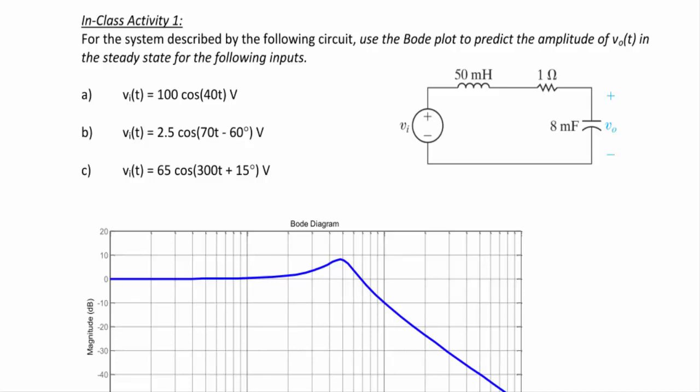Now we will look at examples using second-order Bode magnitude and phase plots to determine the sinusoidal steady-state frequency response of a system. For the system described by the following circuit, we have already created the amplitude and phase plots, and we want to find V_out(t) in the steady state for the following inputs: (A) V_i(t) = 100 cos(40t), so omega = 40 rad/s; (B) V_i(t) = 2.5 cos(70t − 70°), so omega = 70 rad/s; and (C) V_i(t) = 65 cos(300t + 15°), so omega = 300 rad/s.